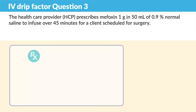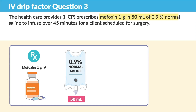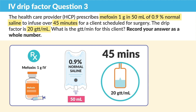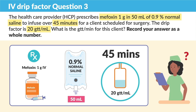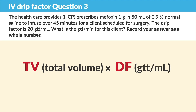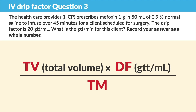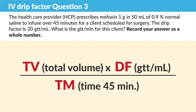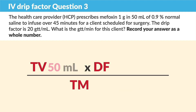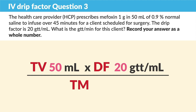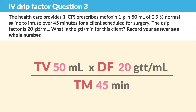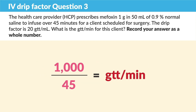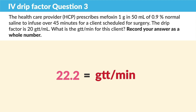For question three, the HCP prescribes mefoxin 1 gram in 50 mLs of normal saline to be infused over 45 minutes — key term: 45 minutes — for a client scheduled for surgery. The drip factor is 20 GTTs per mL. What are the drips per minute? Set up the formula: TV makes you deaf over time. The big thing here is the time — instead of 60 minutes, it's 45 minutes. So: 50 is the total volume, 20 is the drip factor, over 45. We multiply the top row, getting 1,000 over 45, and divide to get 22.2. We can't give 0.2 of a drop, so we round down. The correct answer is 22 drips per minute.